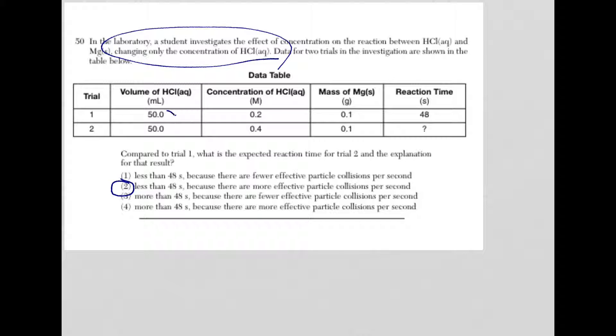In trial 1, they both have the same volume. In trial 1 to 2, they both have the same mass of magnesium. We're looking at reaction time, and what do we do? We doubled the concentration of hydrochloric acid, so therefore the reaction time should go down. Meaning that there's more HCl around to collide with the magnesium, and therefore it's going to take a shorter amount of time for the reaction, because there are more effective particle collisions. So the answer is choice 2.